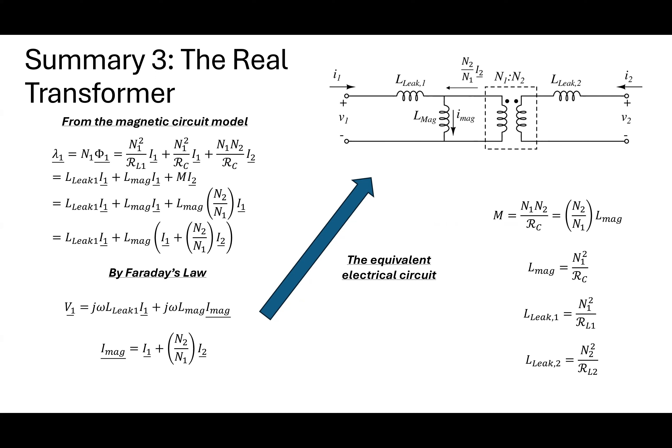Then we use Faraday's law to get to an electrical circuit model — v equals d-lambda/dt. In the phasor domain, the d/dt becomes j-omega. This applies in steady-state sinusoidal conditions; you can't have a Fourier series — you need steady state at a single frequency. All my parameters are here.